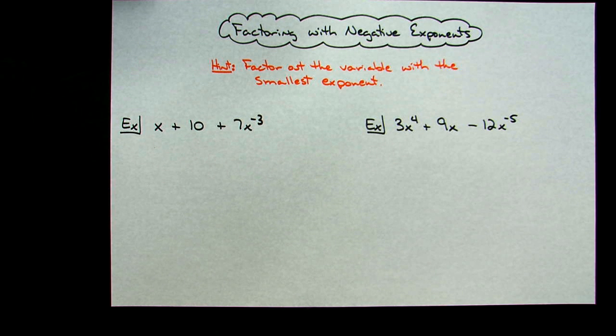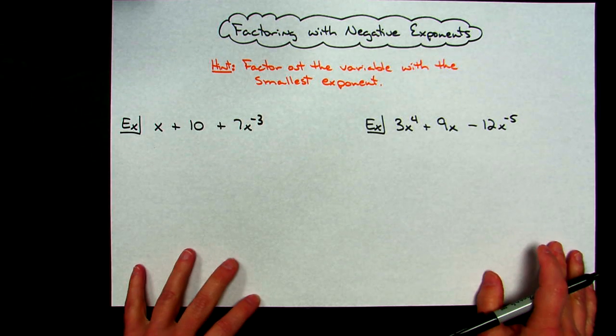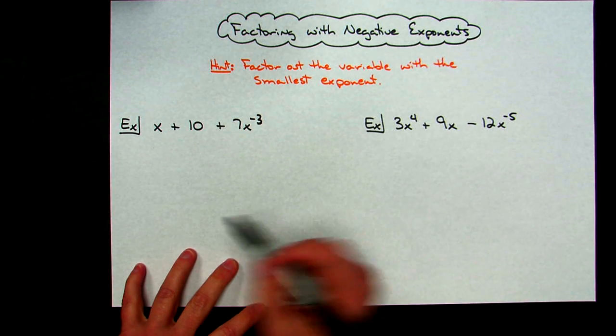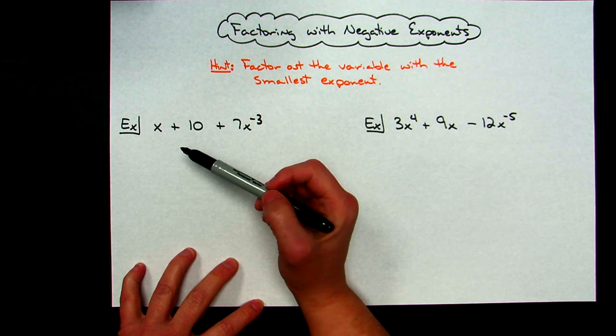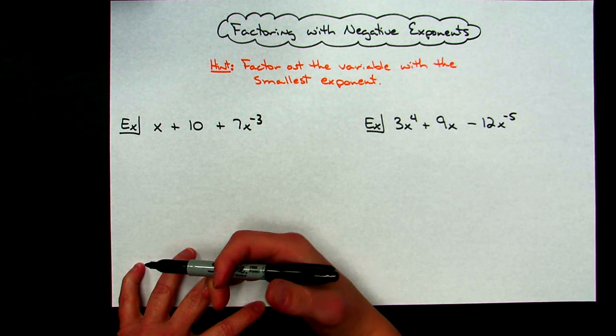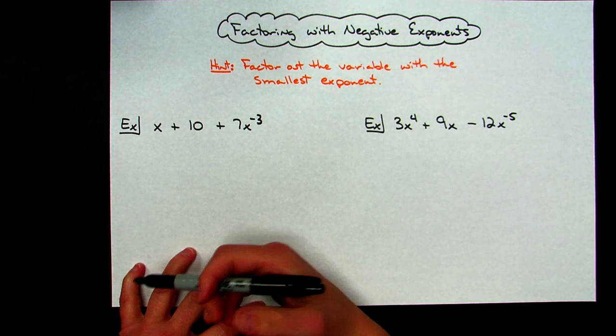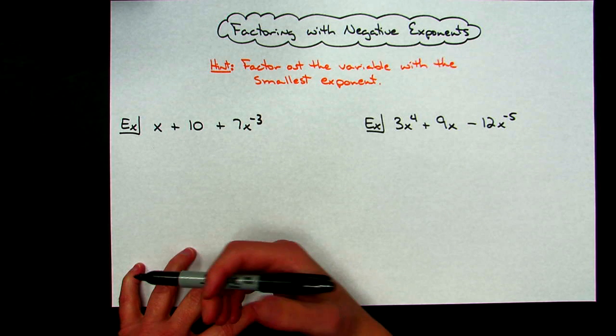Today I'm going to work out a couple of factoring examples that show you how to deal with negative exponents. I do have a little hint set up here for you. If you just keep in mind whenever you take out the greatest common factor, we really do take out the smallest exponent on our variables.